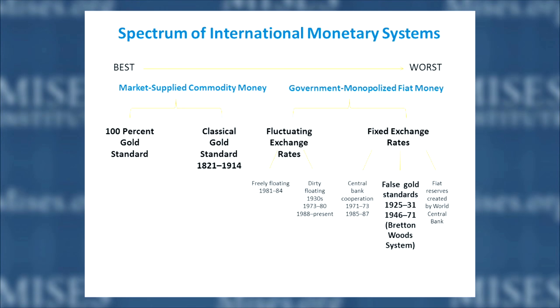Let's start with a spectrum of international monetary systems. All the way on the left you have the best systems. Money came into existence as 100% either silver or gold standard. We know that money developed from barter as a useful good or service previously exchanged in barter. By the Middle Ages, and certainly even before, government began intervening and taking over some of the functions of money. By the 19th century, though we had a sound money and a market-supplied money, there were a number of different government interventions into the system.